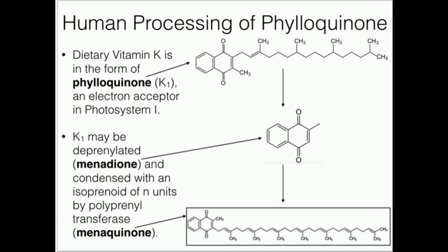Phyloquinone, or vitamin K1, has one completely different use in plants — they use it as an electron acceptor in their electron transport chain in photosystem one. However, we're going to use it for something very different in the human body.